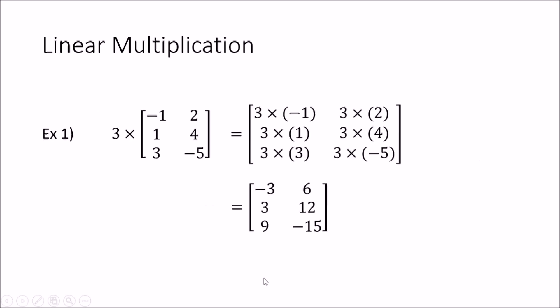Now we look at a numerical example. We have the matrix with elements: minus one, minus one, two, one, four, and three, minus five, and we are going to multiply by the constant three. Three into minus one gives minus three, three into two is six, three into one is three, three into four is twelve, three into three is nine, and three into minus five gives minus fifteen. So we are simply multiplying each element of the matrix by the constant to get the resultant matrix.